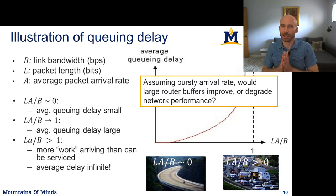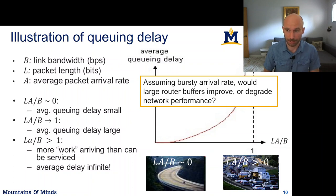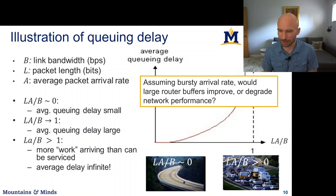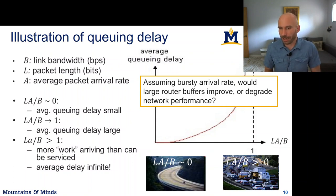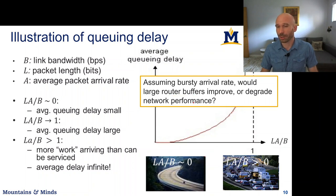If traffic arrives in a bursty way — sometimes people send data, sometimes they don't, and there are oscillations in requests across many users — the arrival rate fluctuates. Given this bursty arrival rate, would larger router buffers improve or degrade network performance? Take a moment to think about it.